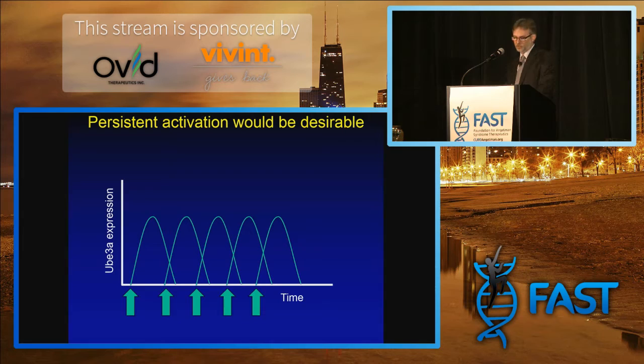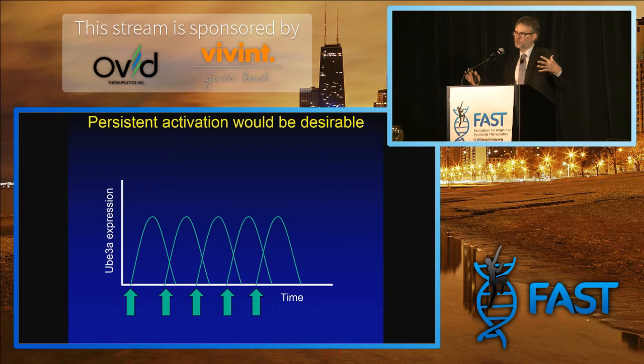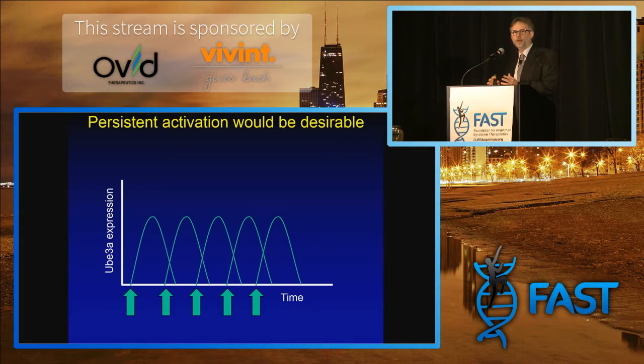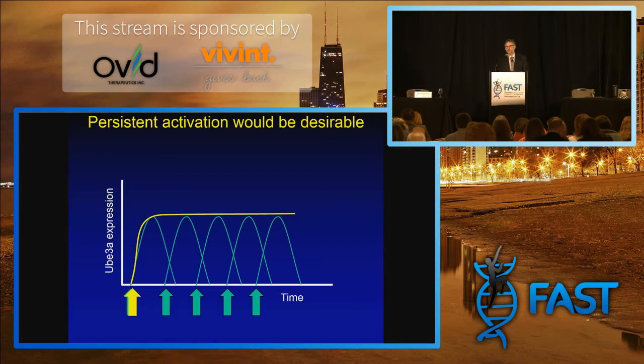This has set up an important challenge in our research. If there's a relatively short duration, we would inject and maybe get some level of UBE3A reactivation, but then it would go down. To show that picture with all the brain tissue lighting up, what we did was inject three times a week for four weeks — that's a lot of injections and a lot of protein. It became very problematic to think about trying to move that kind of therapy towards a clinical trial.